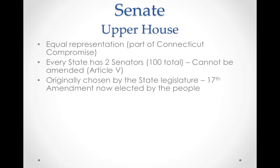The 17th Amendment changed that. A lot of people didn't think the original method was very democratic, and so they wanted the people to be able to pick the Senate just like they picked the House of Representatives. This process was intended to make the Senate more democratic — democracy means people have the power — by now allowing the people and not the state legislature to pick the senators.